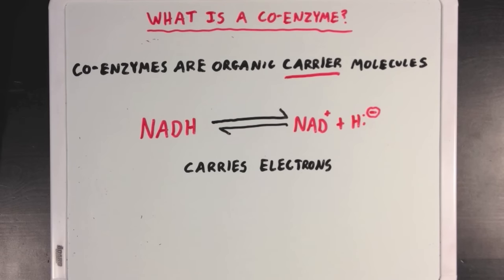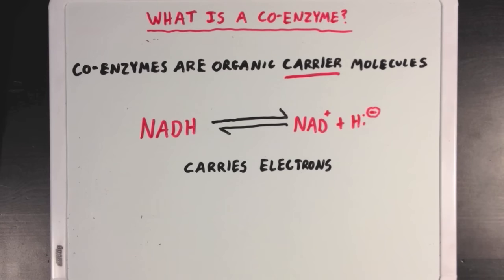Here, I've shown NADH dissociating into its oxidized form, NAD+, as well as a hydride ion, which basically just exists as a pair of electrons that some other molecule would be grabbing. So NAD+ can accept electrons, causing the molecule to be converted to NADH, which could then carry electrons for an enzyme.